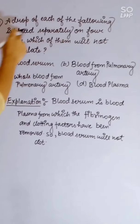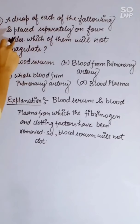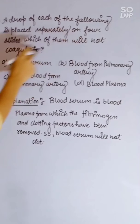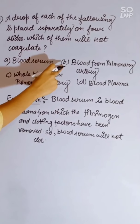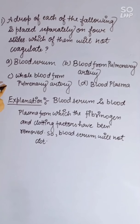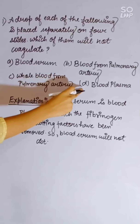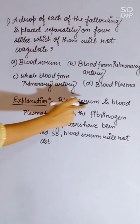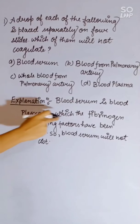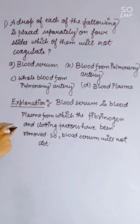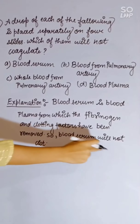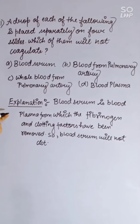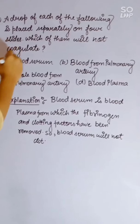A drop of each of the following is placed separately on four slides — which will not coagulate? Options: blood serum, blood from pulmonary artery, pure blood from pulmonary artery, or blood plasma. Blood serum is blood plasma from which fibrinogen and clotting factors have been removed. Therefore blood serum will not coagulate. Correct answer is blood serum.